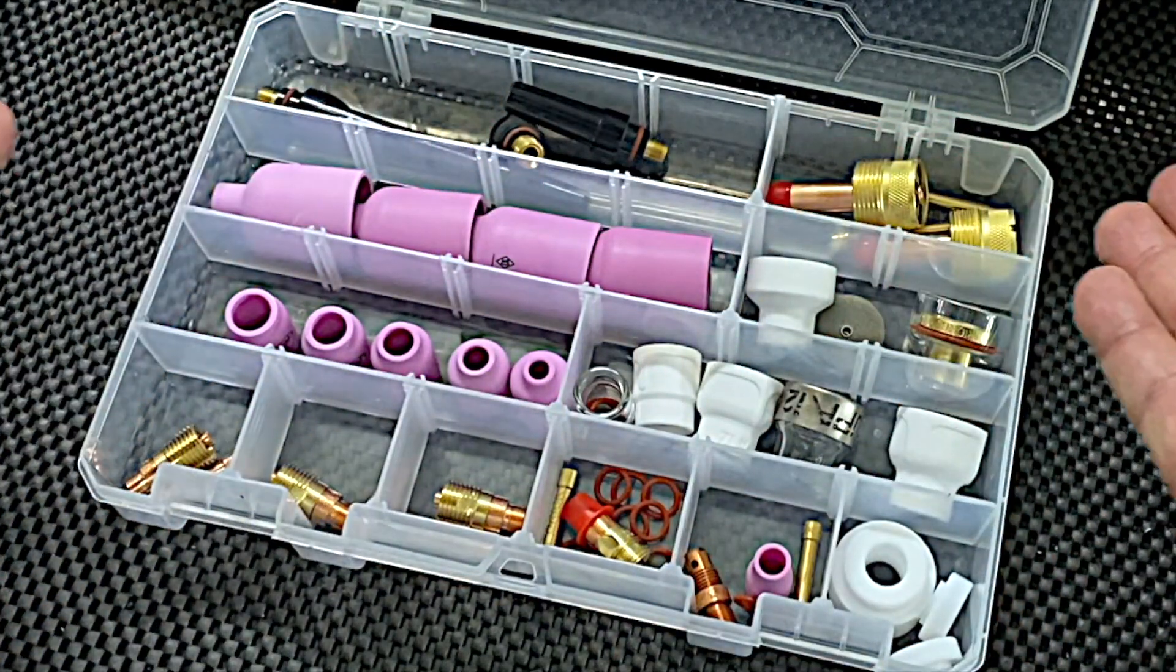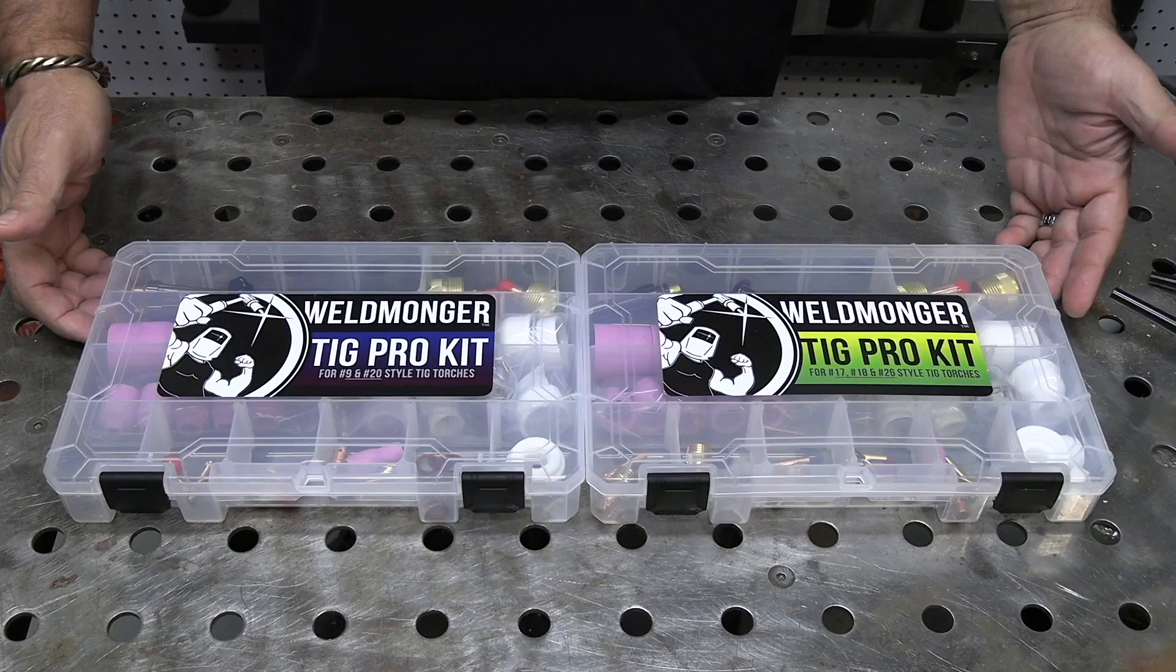A number eight is great for stainless steel. You'll see me working out of this kit in several videos going forward. All you need to do is select the right kit for your torch. The link will be around here somewhere to take you right to the TIG Pro Kit page. If you can't find it, just go to weldmonger.com, you'll see it right there.